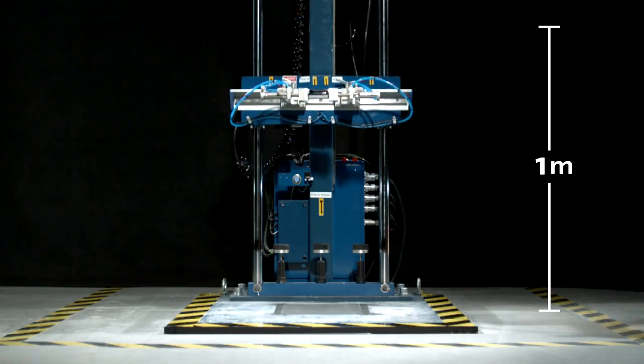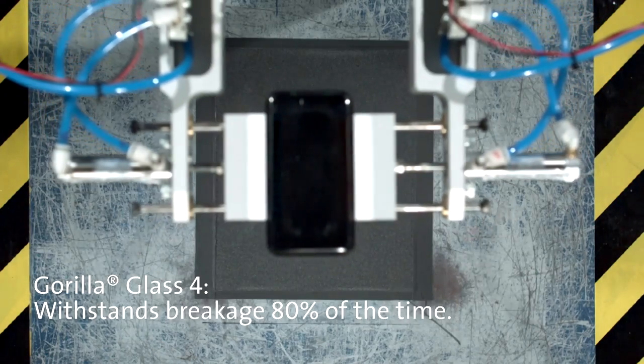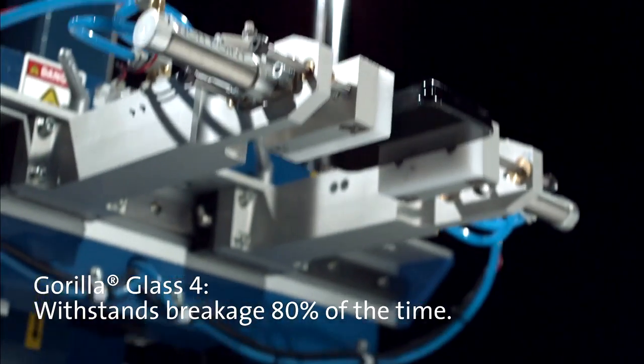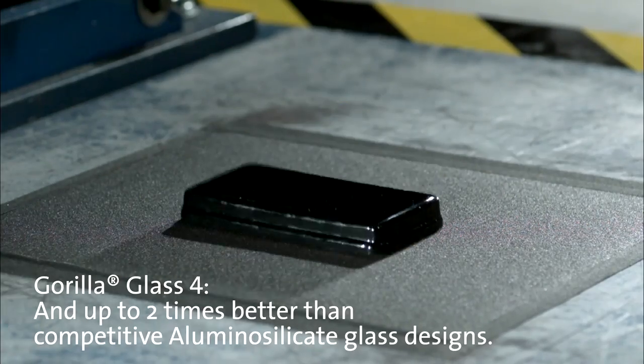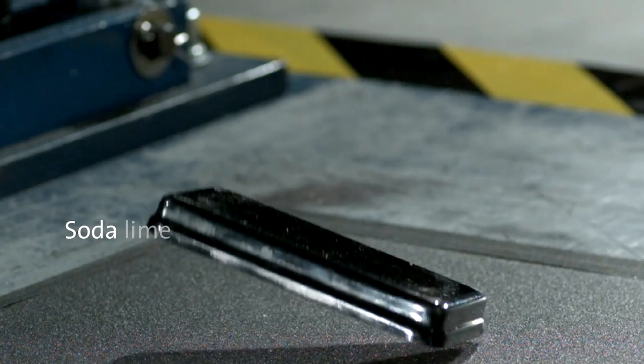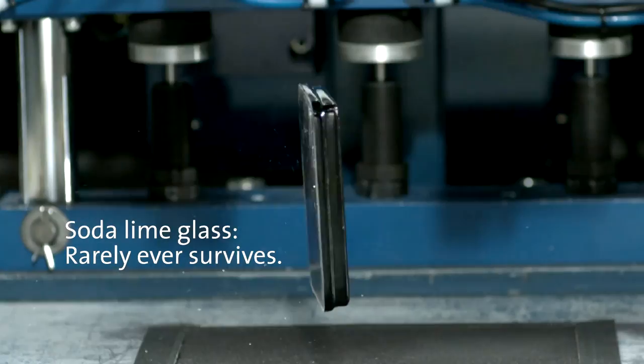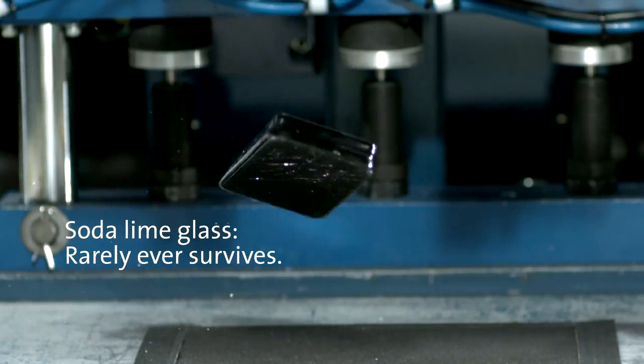To put it another way, Gorilla Glass 4 survives drops on rough surfaces 80% of the time, and up to two times better than competitive aluminosilicate glass designs, and soda lime glass as deployed in today's commercial devices breaks almost all of the time.